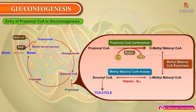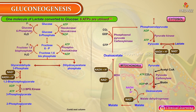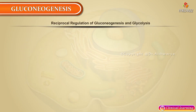Entry of propionyl-CoA into gluconeogenesis is catalyzed by three enzymes: propionyl-CoA carboxylase, methylmalonyl-CoA racemase, and methylmalonyl-CoA mutase. Propionyl-CoA carboxylase requires biotin and ATP; methylmalonyl-CoA mutase requires vitamin B12. For one molecule of lactate converted to glucose, six ATPs are utilized: two for pyruvate carboxylase, two for PEPCK, and two for 1,3-BPG kinase.